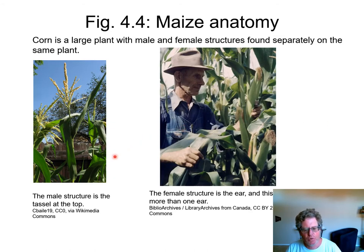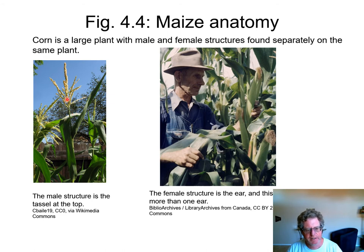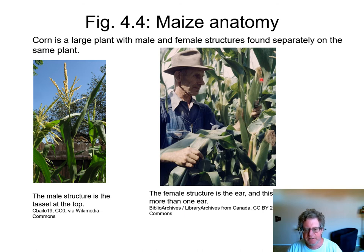Here's the anatomy of corn. It's a very tall plant — it can be taller than you. At the top is the male part, called the tassel, and it produces pollen which contains the sperm inside. Along the leaves down below are the ears, and in a big plant there can often be multiple ears. If you peel back the ears, that's the female part, and it contains many grains. Every grain is an individual fruit, so it's multiple fruits.